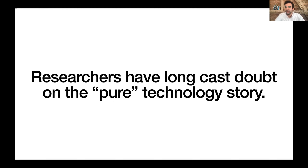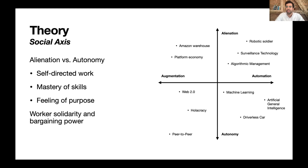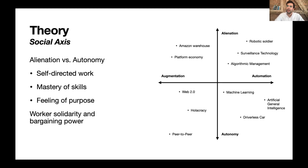Researchers have long cast doubt on this pure technology story. They've said that how technologies are actually implemented in production depends on a variety of social factors. Sometimes technologies are implemented in ways that improve workers' autonomy — understood as self-directed work, the ability to use mastered skills, and a sense of purpose. A large research body has connected these feelings of autonomy to worker solidarity, bargaining power, and larger labor market and social institutional frameworks.